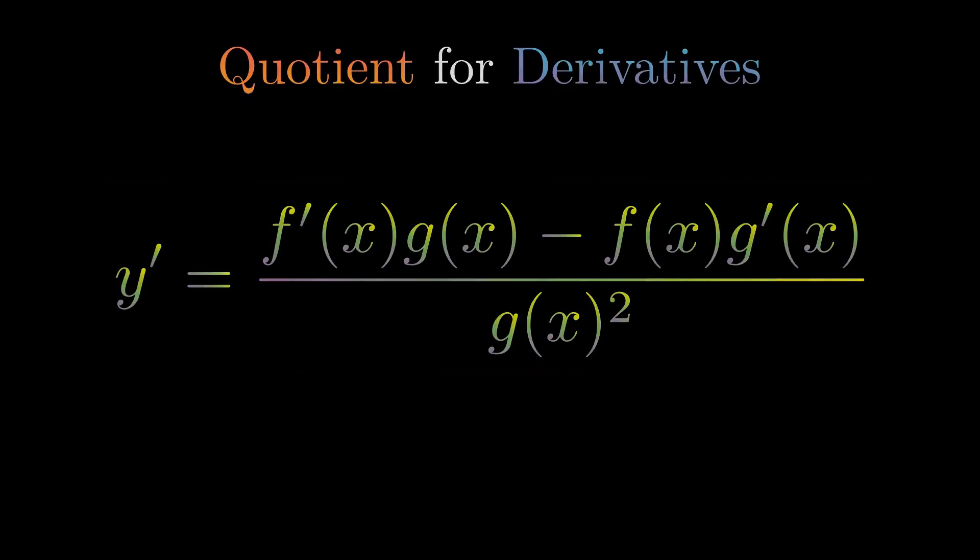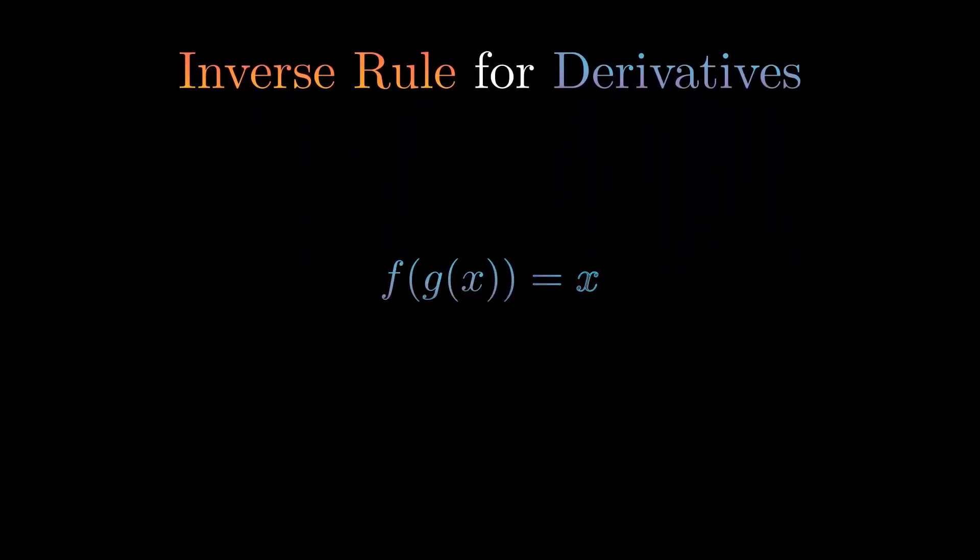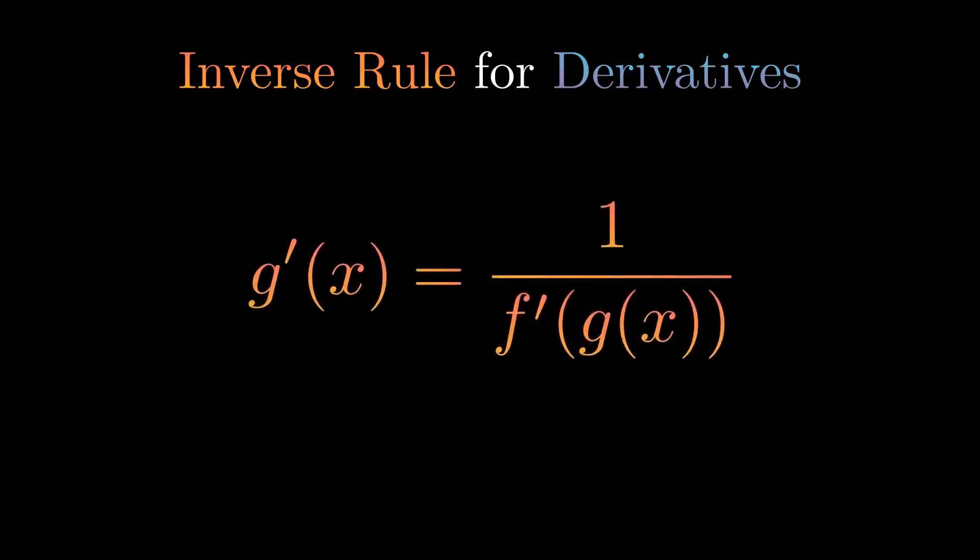Lastly for our rules, we have the inverse rule. This proof is actually one of the easiest. We first define g(x) to be the inverse of f(x), meaning that f(g(x)) is x by definition. We then differentiate both sides using the chain rule for the left side. We get the following equation. Dividing both sides by f'(g(x)), we get an equation for the derivative of g(x), which we defined earlier as the inverse of f(x). That is the inverse rule for derivatives.